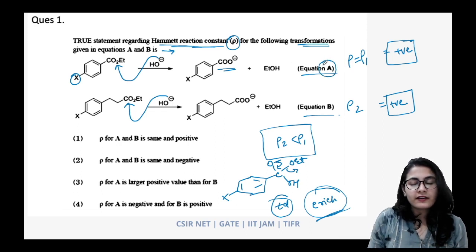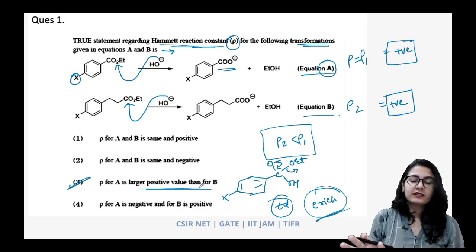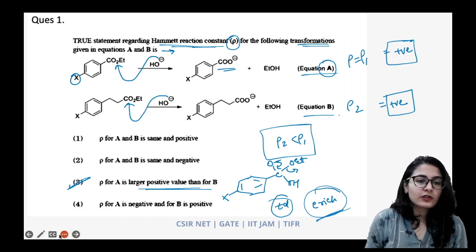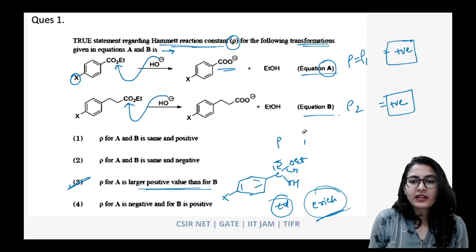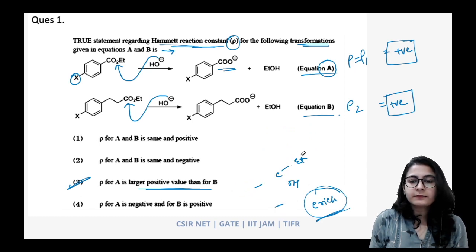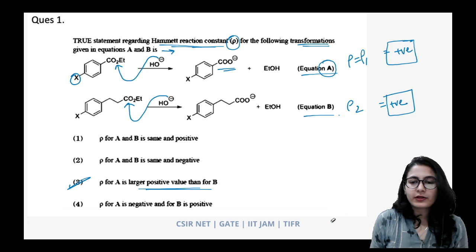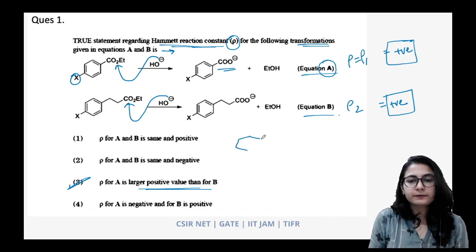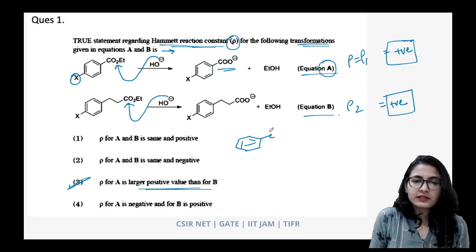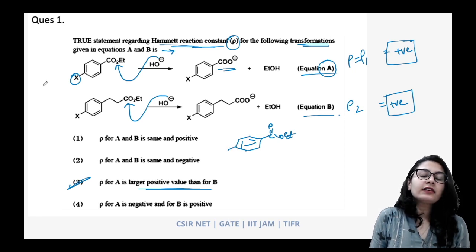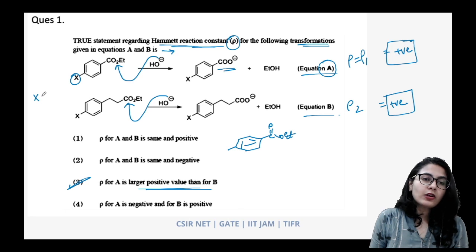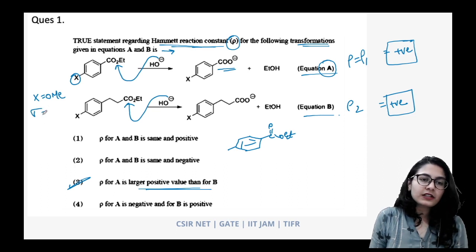The correct answer is that rho for A is a larger positive value than for B. To understand why: consider the ester C=O–OEt directly attached to benzene. The role of substituent X matters — if X is methoxy (electron-donating), the sigma value is negative; if X is nitro (electron-withdrawing), the sigma value is positive. Using sigma × rho = change in rate, we can analyze the effect.